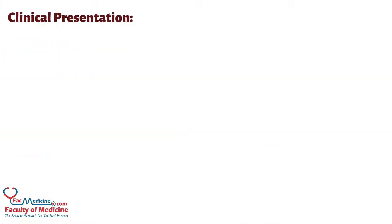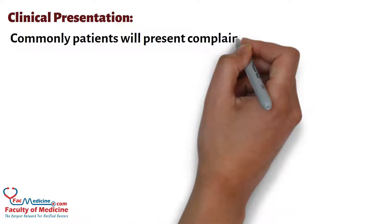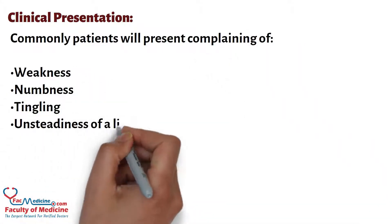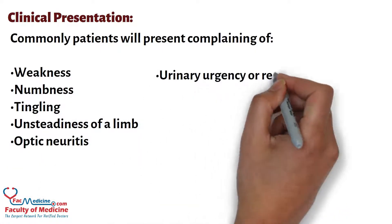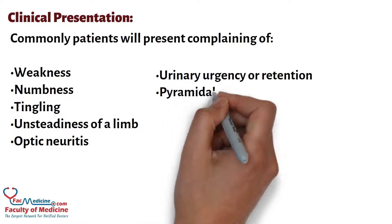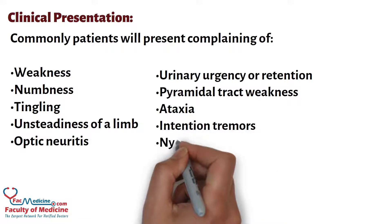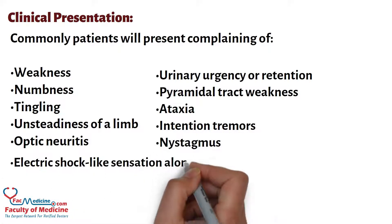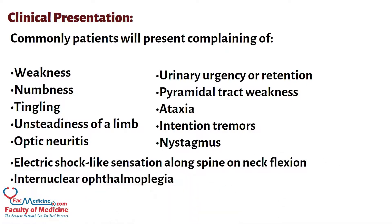Clinical presentation: Patients commonly present with weakness, numbness, tingling, unsteadiness of a limb, optic neuritis, urinary urgency or retention, pyramidal tract weakness, ataxia, intention tremors, nystagmus, electric shock-like sensation along the spine on neck flexion, and internuclear ophthalmoplegia.